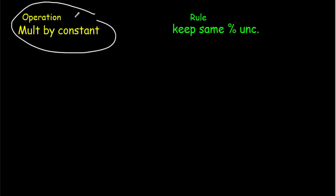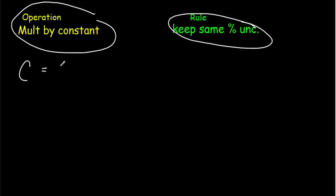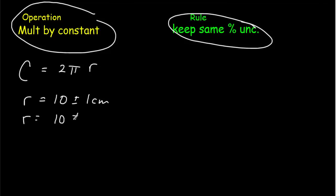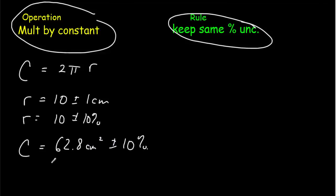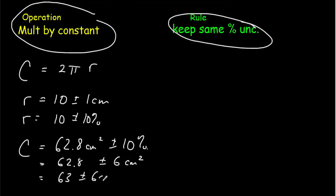Rule 1 applies whenever we're multiplying by a constant. The rule is very simple: keep the same percentage uncertainty. Let's say we want to calculate a circumference: C equals 2π (a constant) times r (our measured value). Say r equals 10 plus or minus 1 centimeter, that is, 10 plus or minus 10%. So we'll also have a 10% uncertainty in the circumference. The circumference is 2π times 10, which is 62.8 centimeters, plus or minus 10%. Ten percent of 62.8 is approximately 6, so our final answer is 63 plus or minus 6 centimeters.